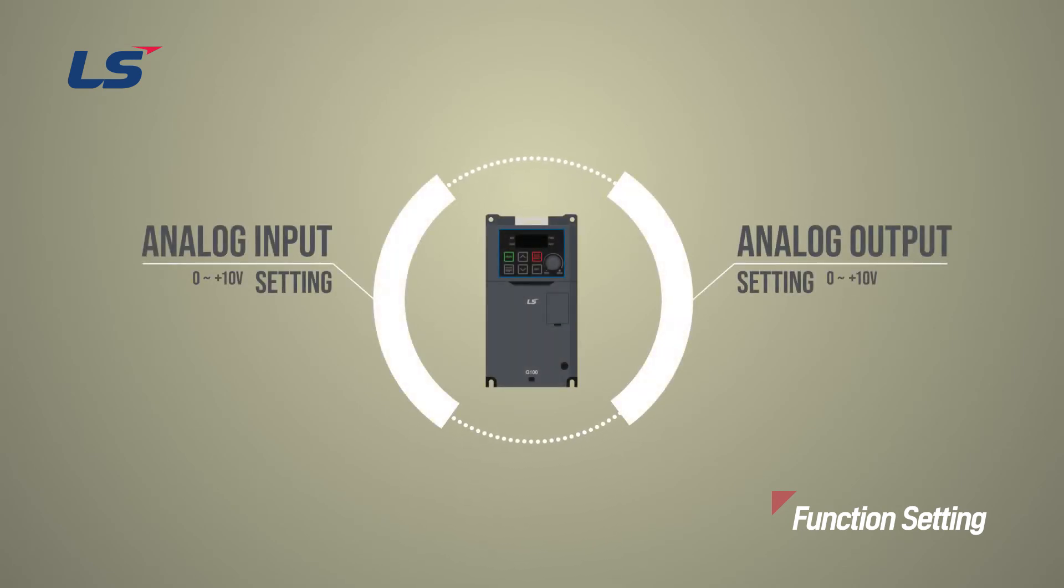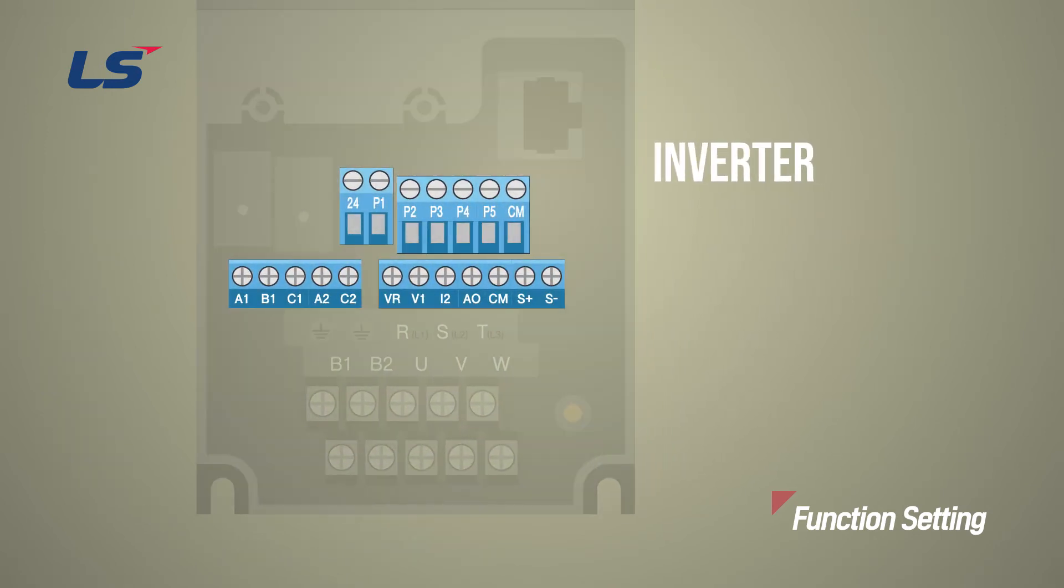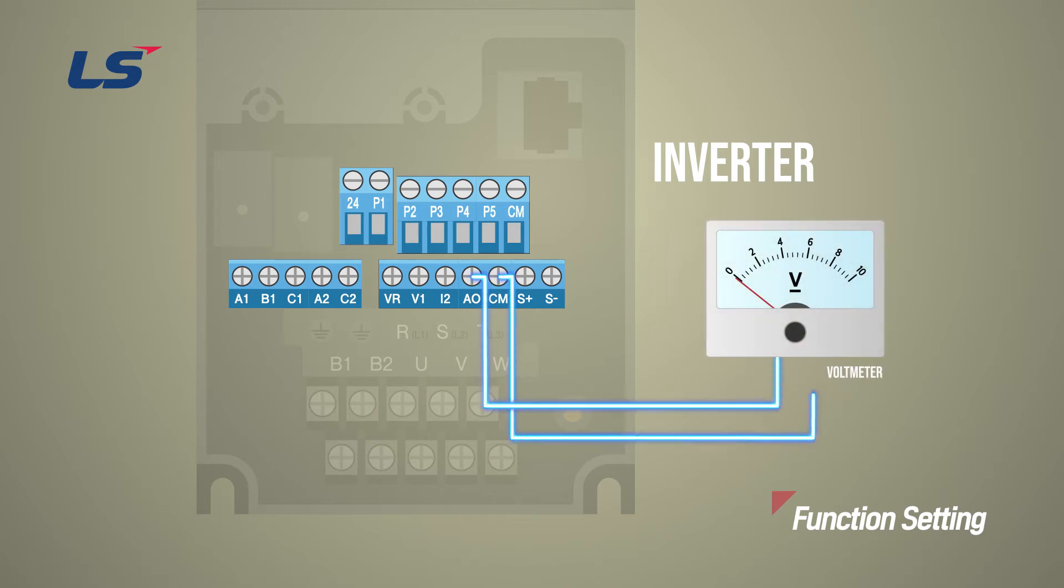Next, we will learn about setting up 0 to 10 volt analog outputs. Analog output terminals are AO and CM terminals. AO is the analog voltage output terminal, and CM is the analog input and output common terminal. To output voltage with a voltmeter, connect the two terminals AO and CM.